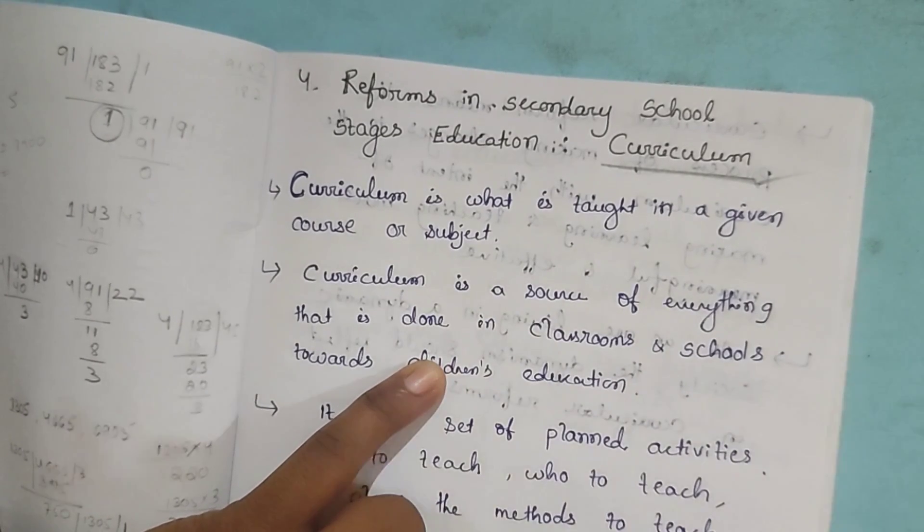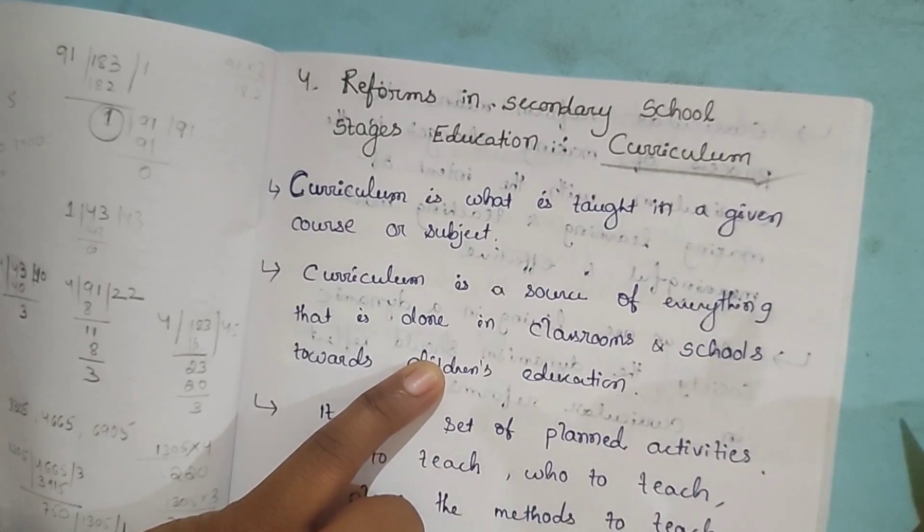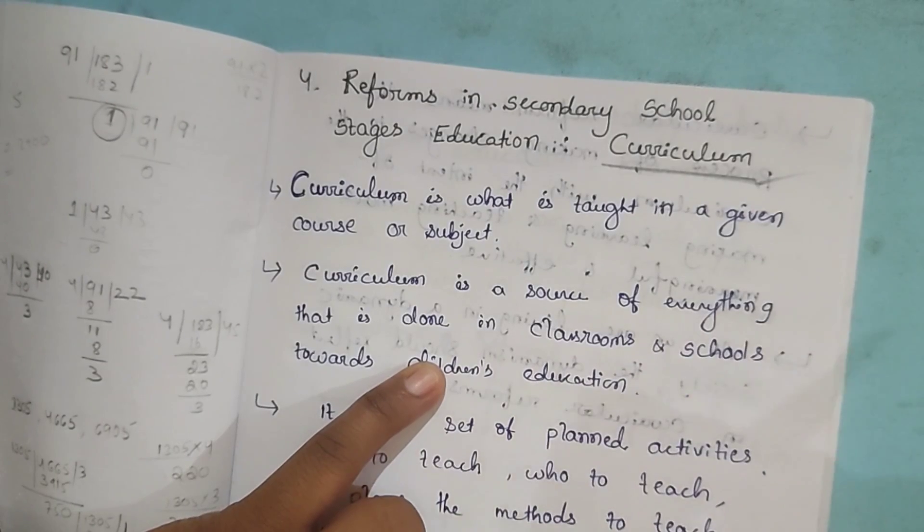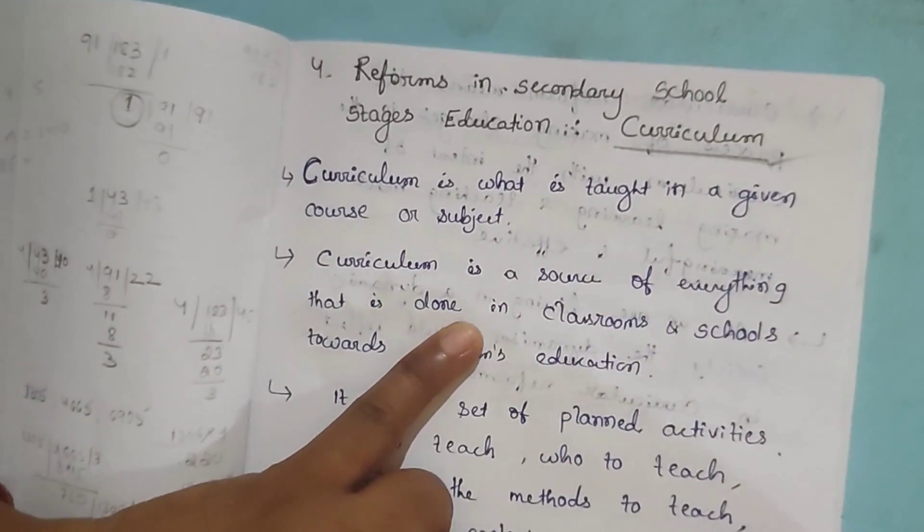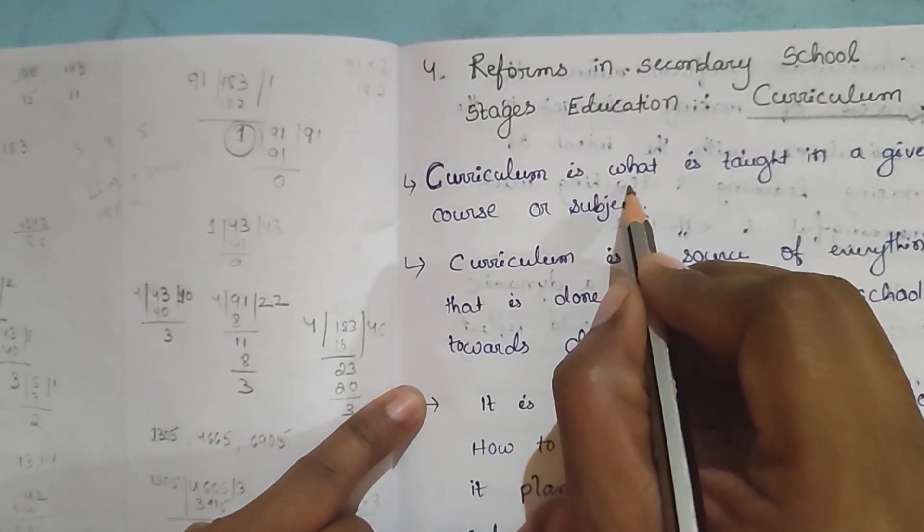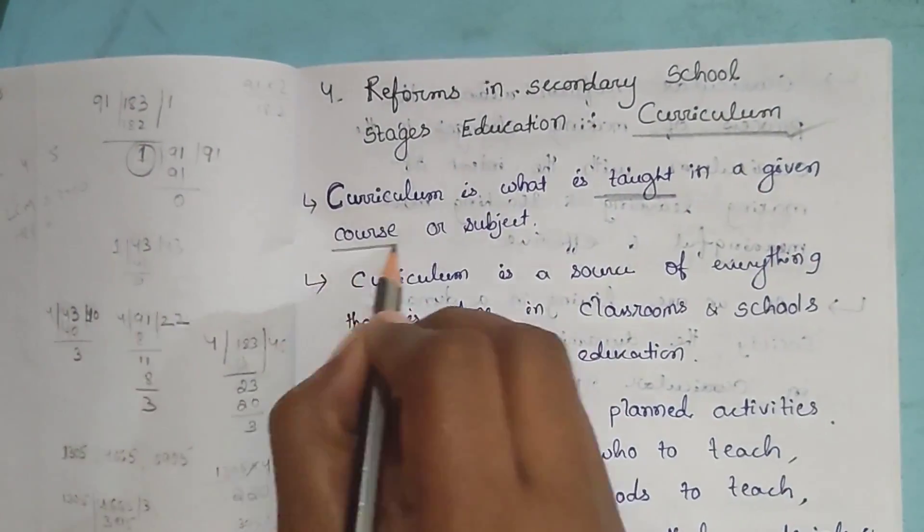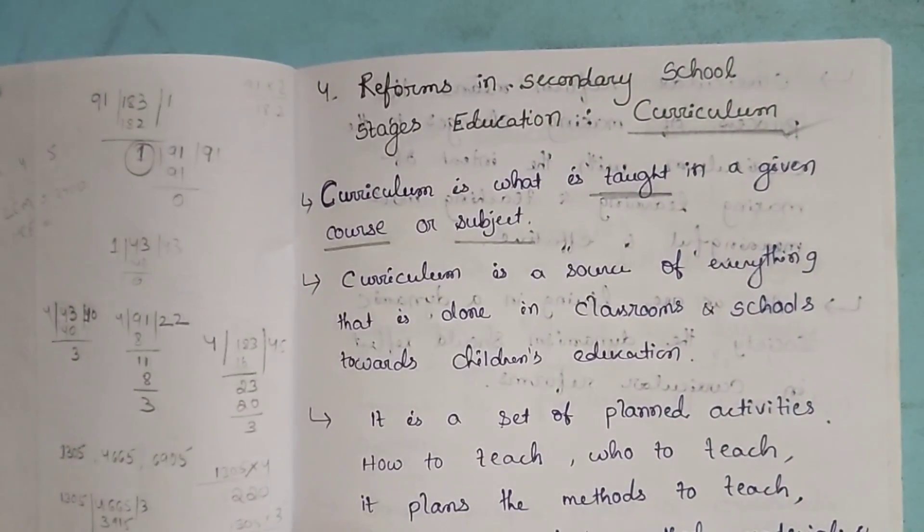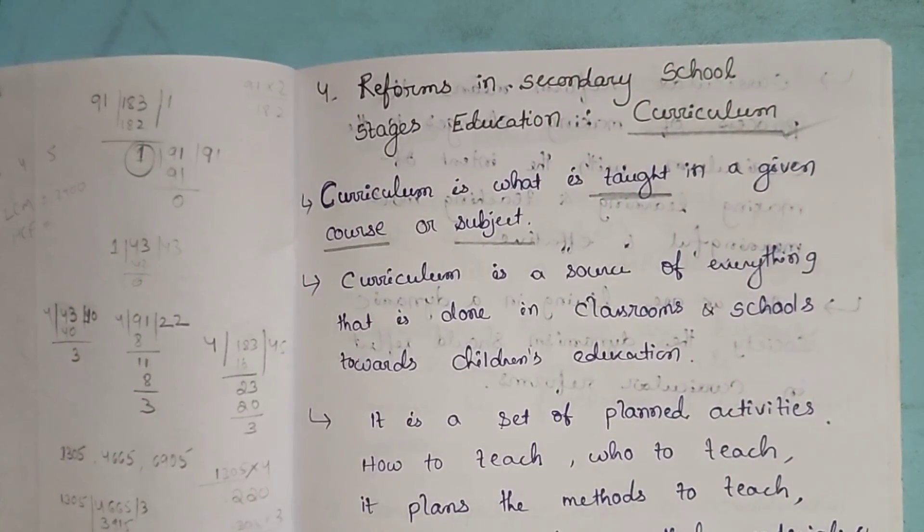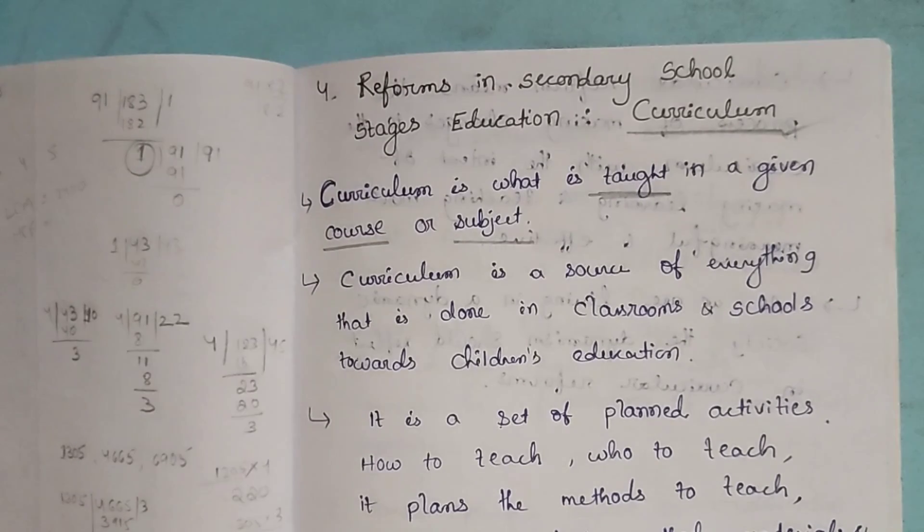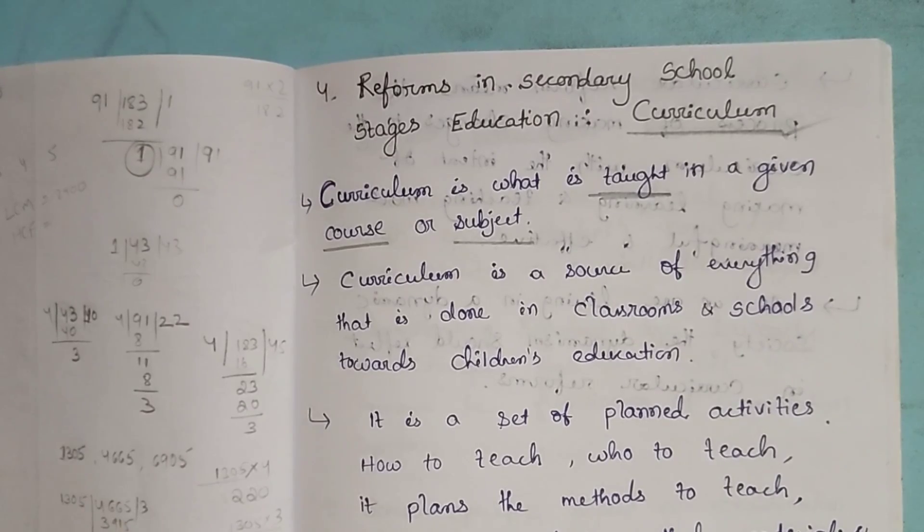What are the topics in class 8, what topics should be in class 7? The topics in class 7 are also in class 8, but they are more advanced. The level of difficulty is more as compared to the previous class. So friends, curriculum is what is taught in a given course or subject, what is taught in a school, what is there in the course, what is there in the subject.